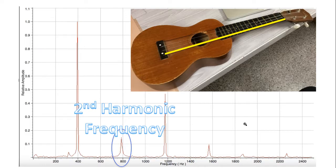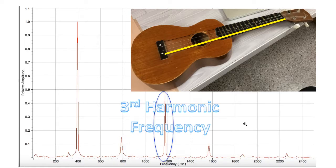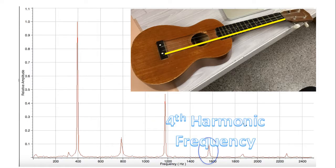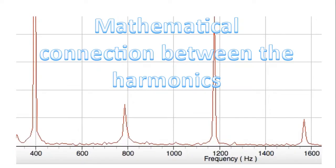Notice its height is much lower than the first harmonic frequency. That means it's not as powerful in terms of the sound that frequency produces. The third spike is called the third harmonic frequency. Again, it's not as tall as the first harmonic frequency, so it's not as powerful. And we have the fourth harmonic frequency.